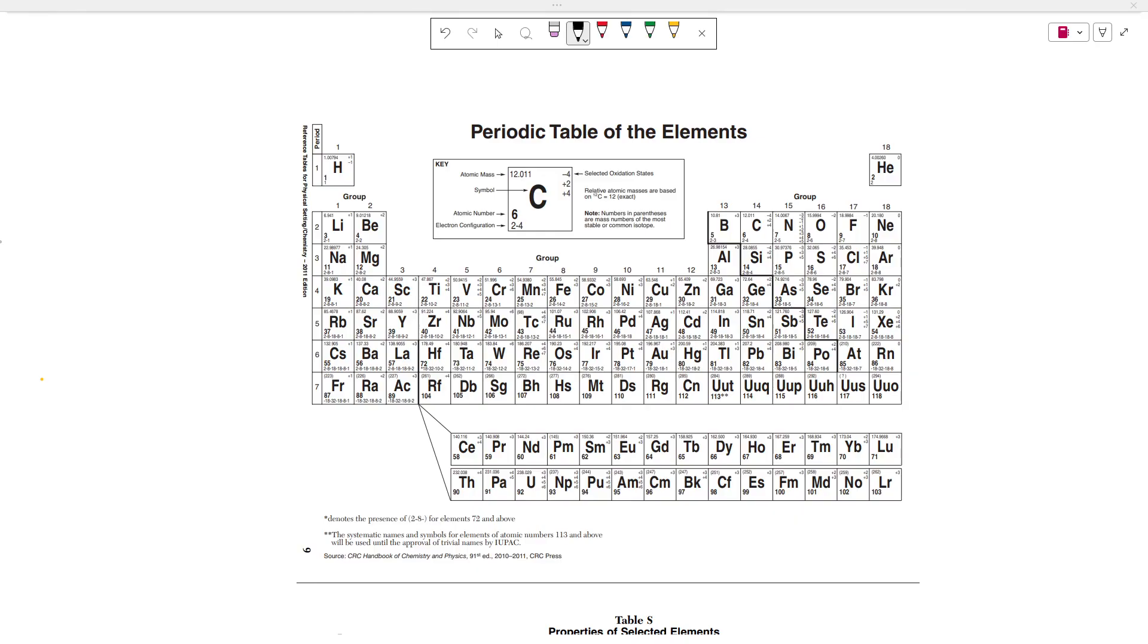The trends are in atomic radius, first ionization energy, electron affinity, and electronegativity. So atomic radius is one of those trends that comes up because of how the periodic table of elements is arranged.